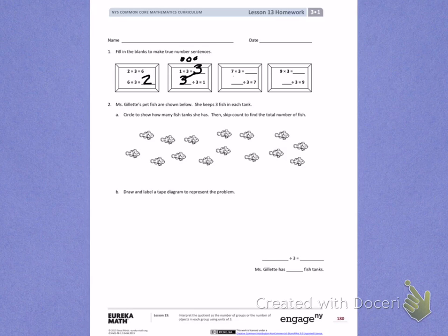Number 2. Miss Gillette's pet fish are shown below. She keeps 3 fish in each tank. Letter A. Circle to show how many fish tanks she has. Then skip count to find the total number of fish. It tells me that she keeps 3 fish in a tank. So I'm going to circle groups of 3.